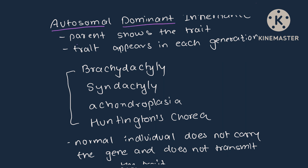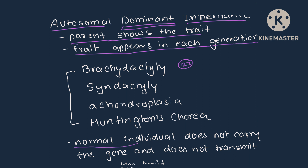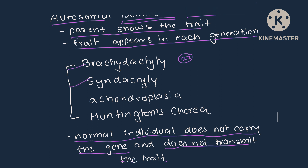Autosomal dominant inheritance — autosomal means related to the 22 pairs of autosomes, and dominant means it will be shown in each generation if present. Parents show the trait, which appears in each generation. Normal individuals do not carry or transmit the gene for the trait. Examples are brachydactyly and thin enamel.